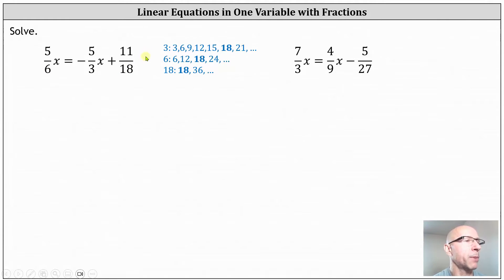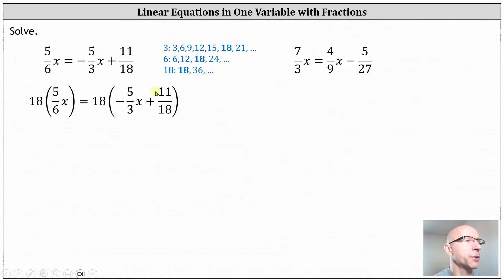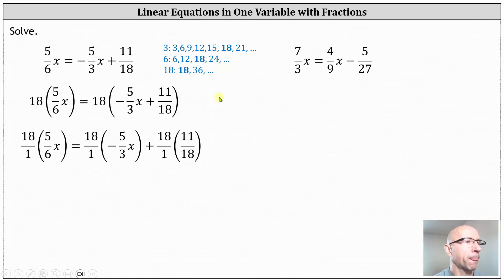Let's go ahead and multiply both sides by 18. Because the products involve fractions, let's write 18 as a fraction with a denominator of one. We'll also distribute 18 on the right side to clear the parentheses. Notice on the right side we now have 18 over one times negative 5 thirds x, plus 18 over one times 11 eighteenths. Before multiplying, we will simplify — all the denominators should simplify to one.